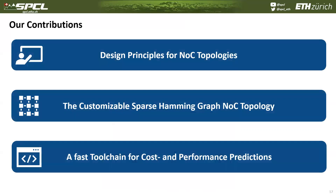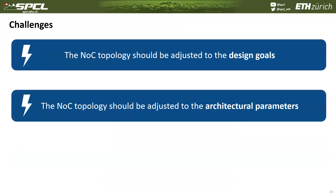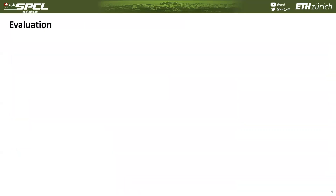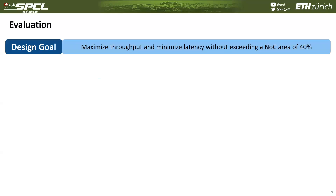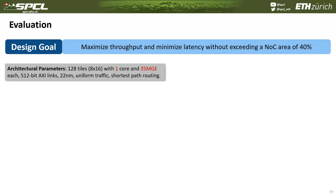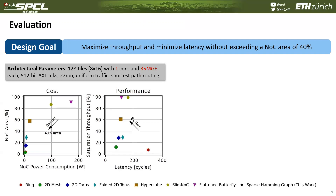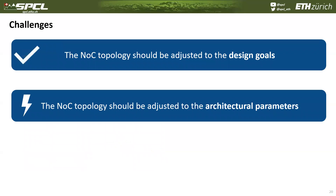So those were our three contributions. But can they actually solve the two challenges we set ourselves? Let's have a look at our evaluation. Assume that our design goal is to maximize throughput and minimize latency without exceeding a network-on-chip area of 40%. Here is our example architecture used for the evaluation, and here we see how the established topologies perform in this setting. By customizing the Sparse HemmingGraph topology, we can get very close to the 40% area line. Among all topologies within our area budget — highlighted in yellow — we provide the highest throughput and the second-to-lowest latency. Based on this evaluation, we can say yes: we can actually adjust the topology to our design goals.